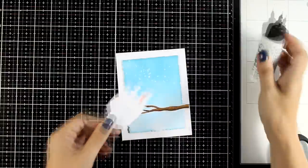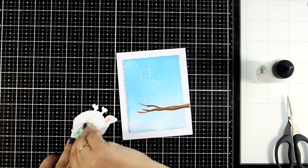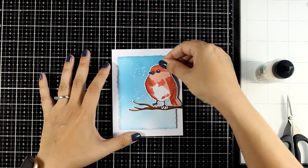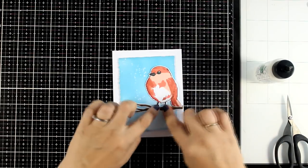And now behind the feet I'm adding glue since I want them to be completely flat on top of the branch. But at the top I did add some foam tape to give a little bit of dimension on my bird.